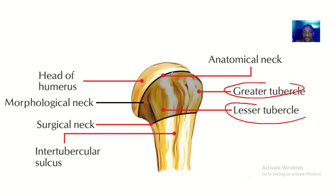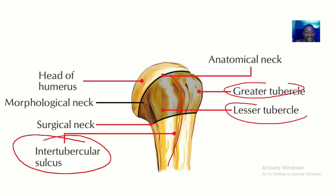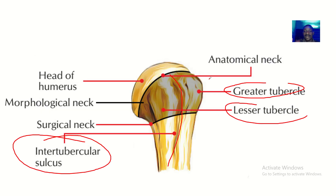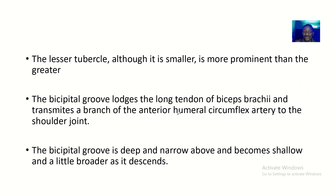Looking at the image, you can see the greater tubercle, the lesser tubercle, and the intertubercular groove between them. Although the lesser tubercle is smaller, it is the most prominent of the two tubercles.